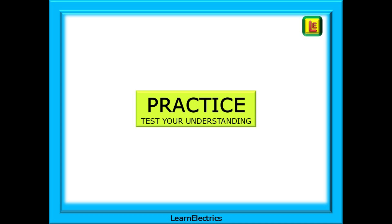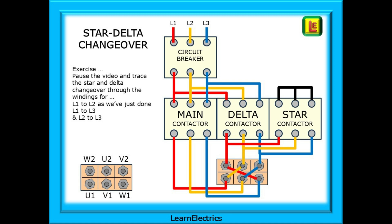As always, it's good to practice and understand what is happening. Here's an exercise for you to try yourself. Pause the video and trace the star and delta changeover through the windings for L1 to L2 as we've just done. And repetition is good, then L1 to L3, and finally L2 to L3.